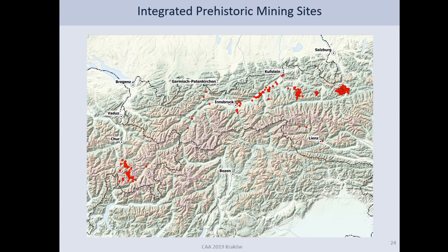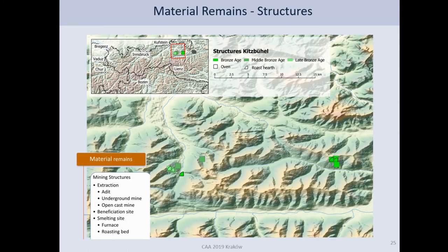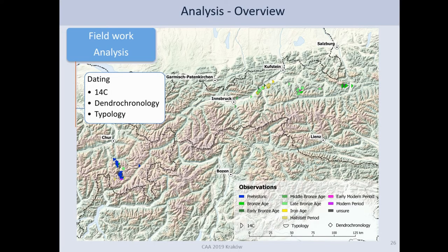We integrated the sites of all three institutions related to the project — this gives an overview of the sites. Then the next thing are the material remains — in this case we have the structures. Behind each symbol you have a network, a knowledge graph, linked to the fieldwork and measurements done on these material structures. Looking at the dating, we see what type of dating was used, and we already see a temporal change going from the Mitterberg down to the Oberhalbstein in the later period.